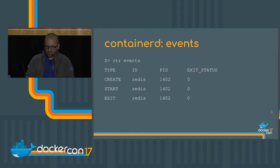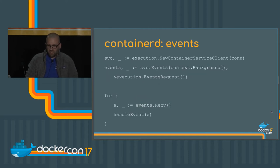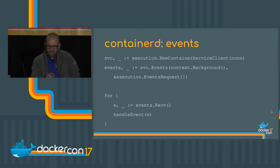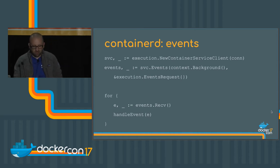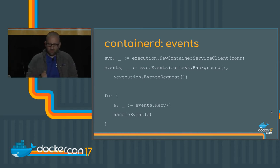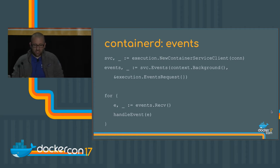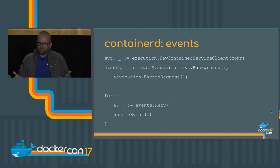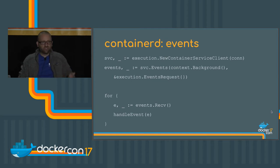So if we want to hook into this, there's going to be some code. Error checking and so forth has been removed; all source code will be at the end with links. The first thing we want to do when working with the container service API is instantiate a new container service, then get a handle to the events system. Then we simply loop and receive — any time we receive an event, we handle it. Pretty straightforward.